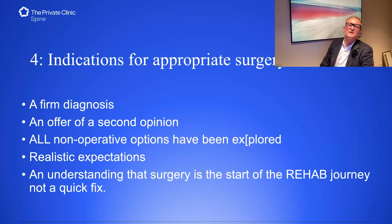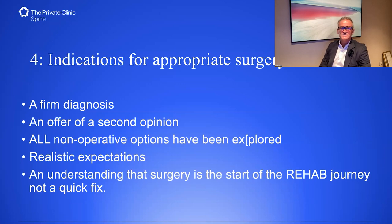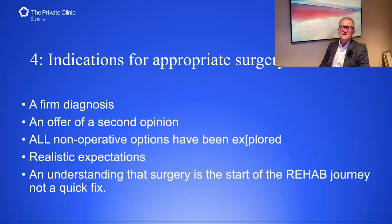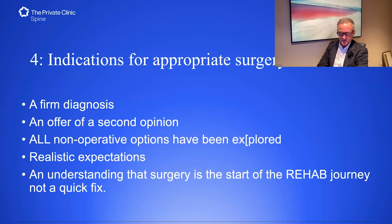Indications for appropriate surgery: the patient needs to understand their diagnosis and it needs to be firm — visible on X-ray or MRI. All non-operative options should have been explored first. The patient needs realistic expectations of what surgery will achieve. Surgery is the start of the rehab journey, not a quick fix. We fix the structural problem and then need to unwind the biomechanical issues that have occurred because of it, and the psychological issues from that pattern of movement or behavior becoming ingrained.